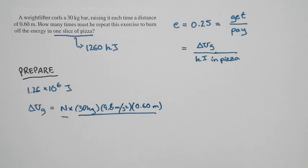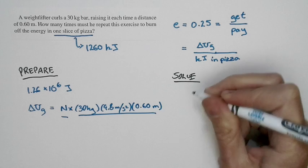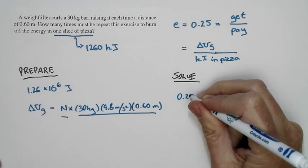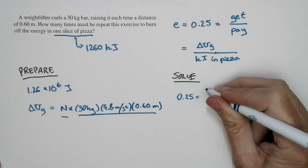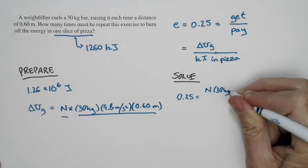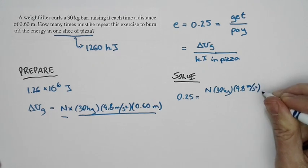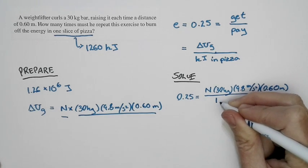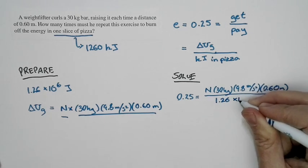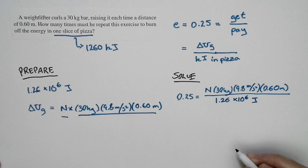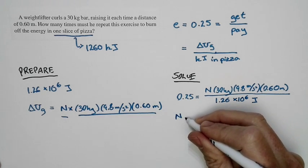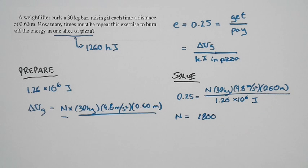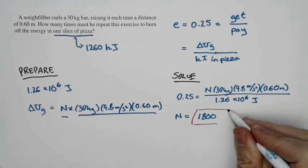Now we're ready to solve. The efficiency ratio equals 0.25, so: 0.25 = N × 30 kg × 9.8 m/s² × 0.60 m, divided by 1.26 × 10⁶ joules. The only unknown is N. Solving to two significant figures gives N = 1800 repetitions — 1800 repetitions to burn off the energy in that slice of pizza.